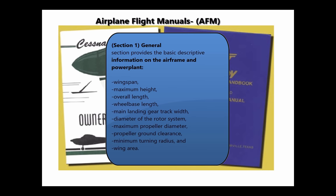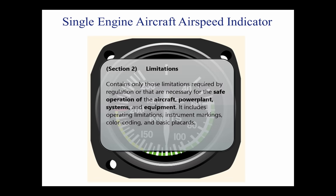Section 1: The General section provides basic descriptive information on the airframe and powerplant. Included are such items as wingspan, maximum height, overall length, wheelbase length, main landing gear track width, diameter of the rotor system, maximum propeller diameter, propeller ground clearance, minimum turning radius, and wing area. This section serves as a quick reference and helps a pilot become familiar with the aircraft.